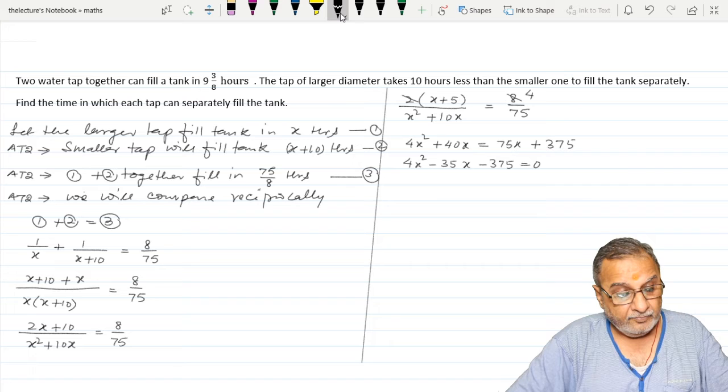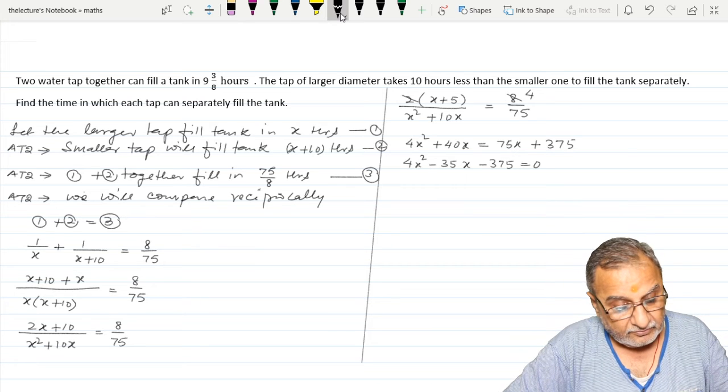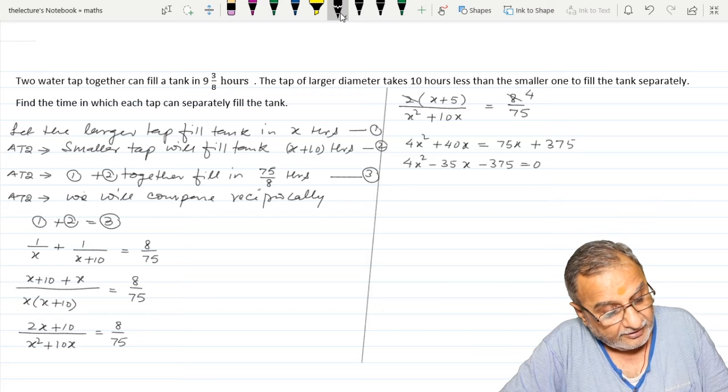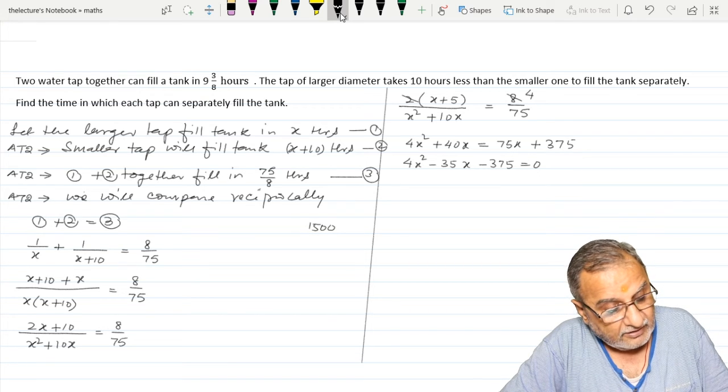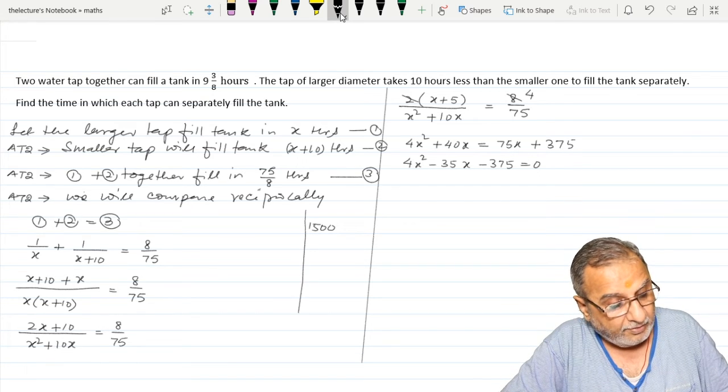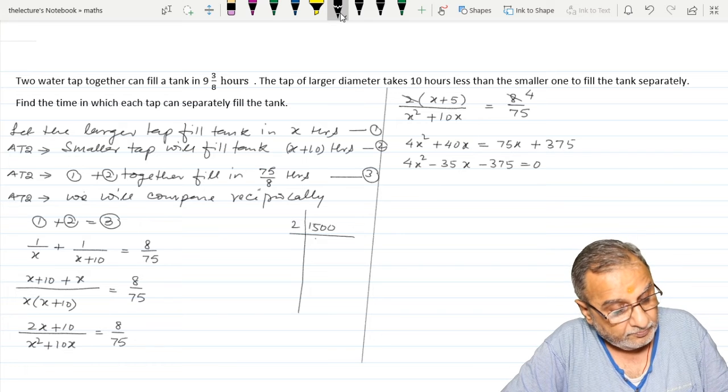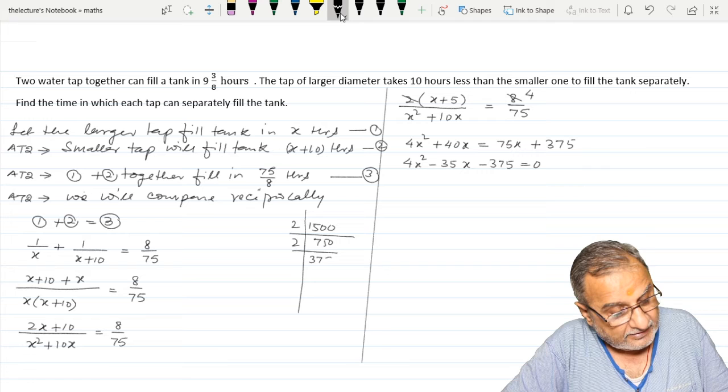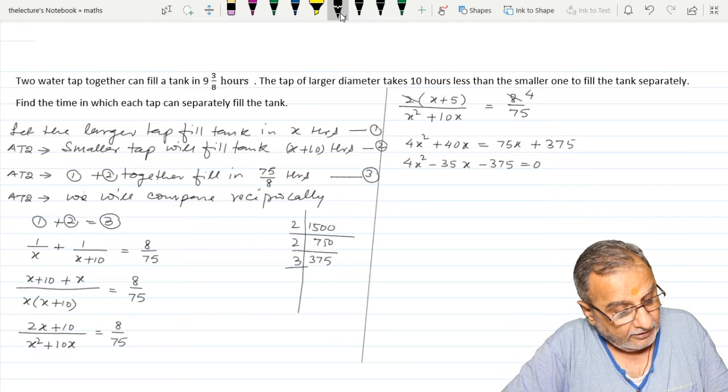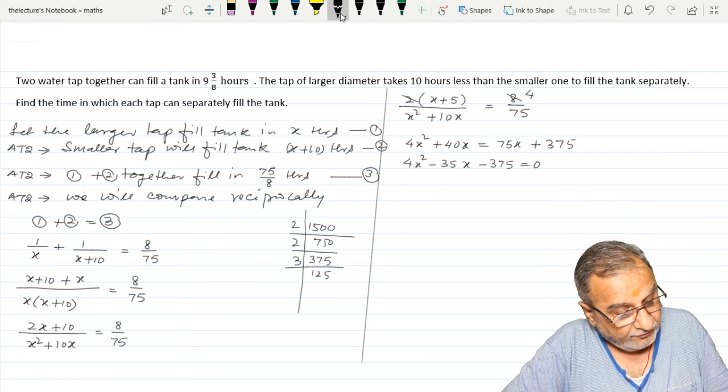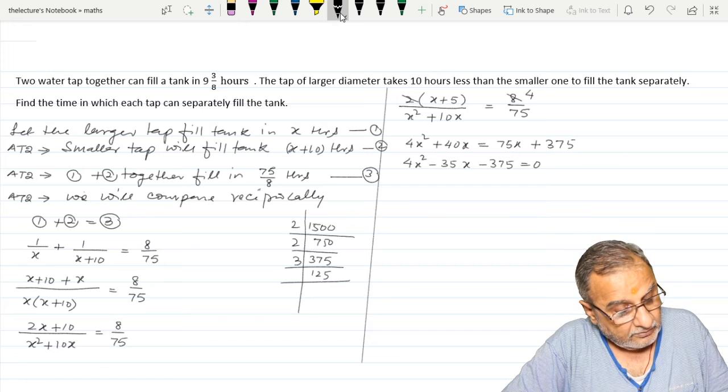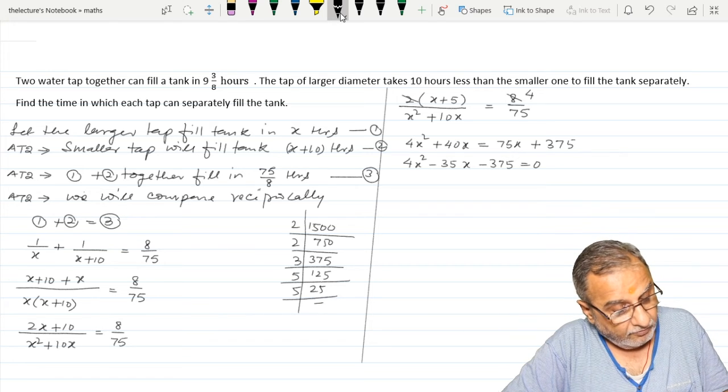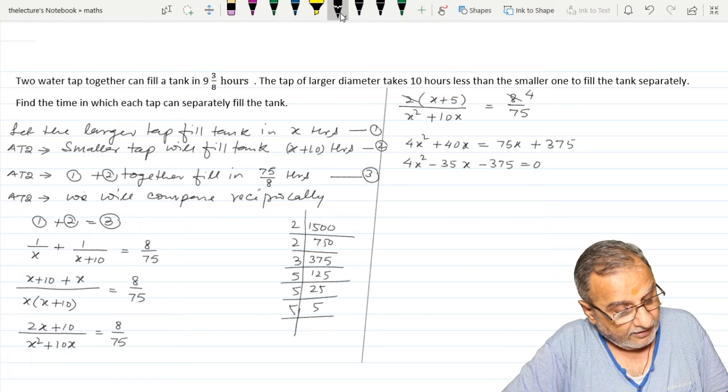So here, 4 multiplied with 375, we will get 1500. So 1500, prime factorize it. 2 gives 750, 2 gives 375, 3 gives 125, 5 gives 25, 5 gives 5, 5 gives 1.